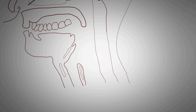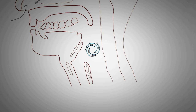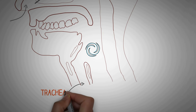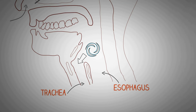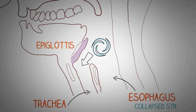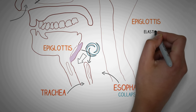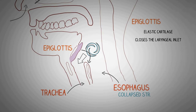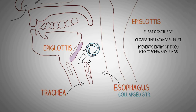When the air reaches the pharynx, it has two important structures where it can go forward: the first is the trachea, which lies in the front, and the second is the esophagus, which lies at the back. Normally the air enters into the trachea because the esophagus under normal conditions is a collapsed structure. One important structure to note is the epiglottis, which is an elastic cartilage that closes the laryngeal inlet and prevents entry of food into the trachea and further into the lungs.